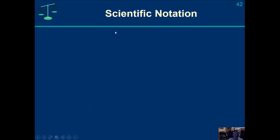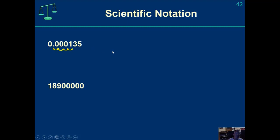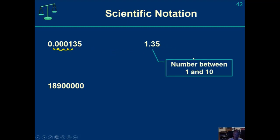Scientific notation — something you should already be familiar with; this is just a review. For a number less than 1, we're going to take the decimal place and move it to the right however many places we need to get just to the right of the first non-zero digit. It looks like we move it 4 places, so we write this value as 1.35 times 10 to the negative 4.